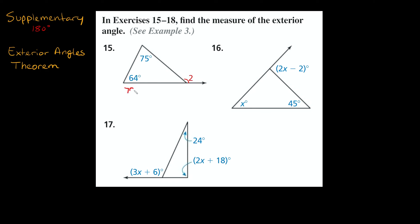So all you have to do is add up these two interior angles and it should equal the exterior angle. So 75 plus 64 equals 139 degrees — and that means this exterior angle out here is 139 degrees. We got the exact same answer as the first method.